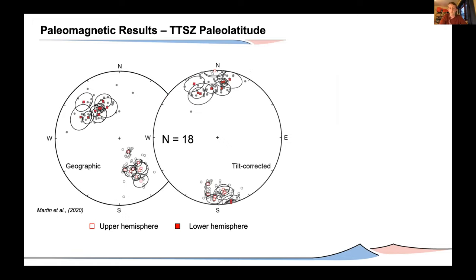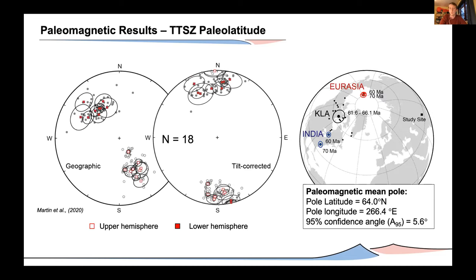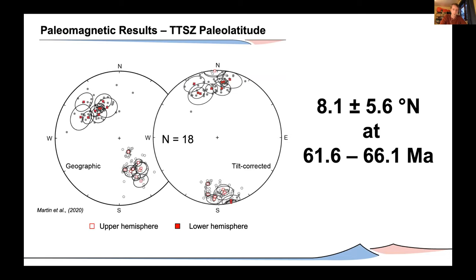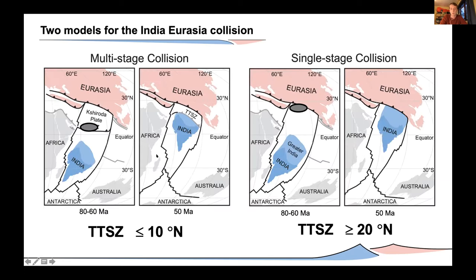Because we're confident that the magnetization directions of our samples are the primary record from when the volcanic rocks formed, we can use them to determine a paleomagnetic pole for the Kargil volcanics and therefore the Trans-Tethyan subduction zone shortly prior to the India-Eurasia collision. The uncertainty angle of our paleomagnetic pole is within the acceptable constraints of Dean et al. 2011. This pole allows us to constrain the Kohistan-Ladakh arc and therefore the Trans-Tethyan subduction system to a paleolatitude of 8.1 plus or minus 5.6 degrees north between 61.6 and 66.1 million years ago.